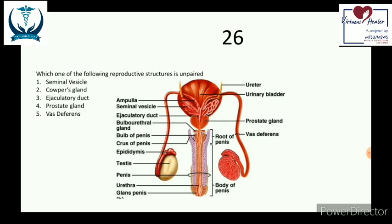The prostate gland secretes a slightly alkaline fluid with mucus, which helps to neutralize vaginal acidity and aids lubrication. Importantly, the prostate gland is not paired — it is the unpaired structure, making it the answer to this question. The Cowper's gland, also known as the bulbourethral gland, adds fluids to semen during ejaculation.